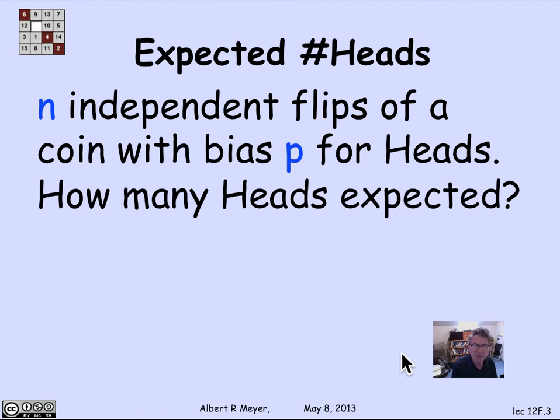We're imagining n independent flips of a coin with bias p. So the coin might not be fair. The probability of heads is p. It would be biased in favor of heads if p is greater than 1/2 and biased against heads if p is less than 1/2. And we want to know how many heads are expected.